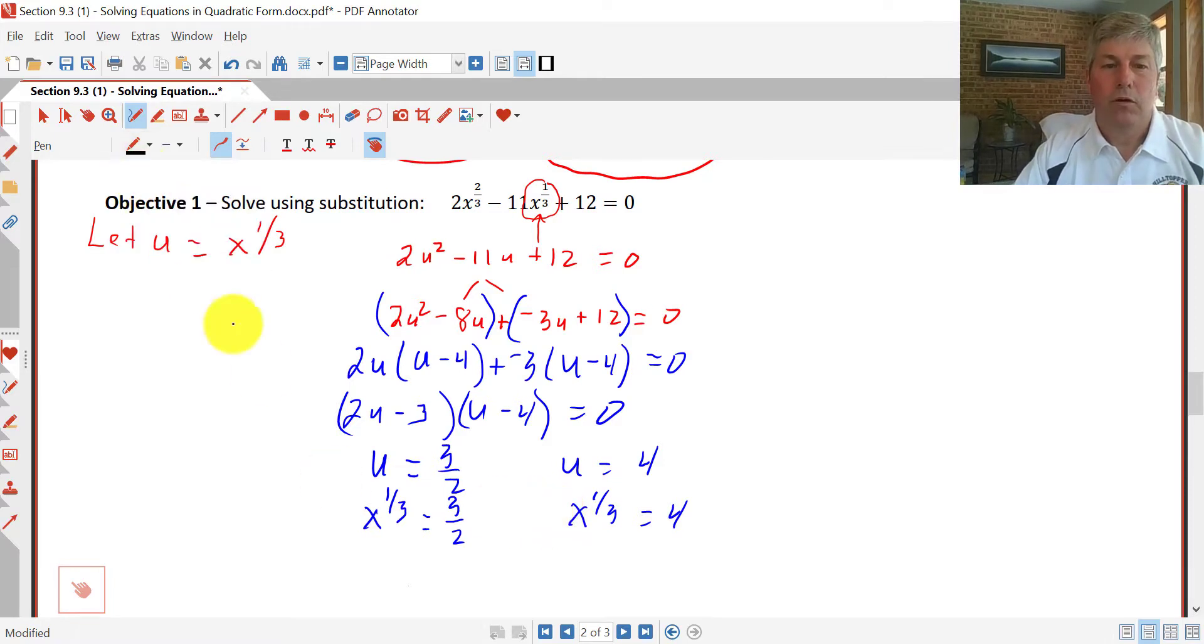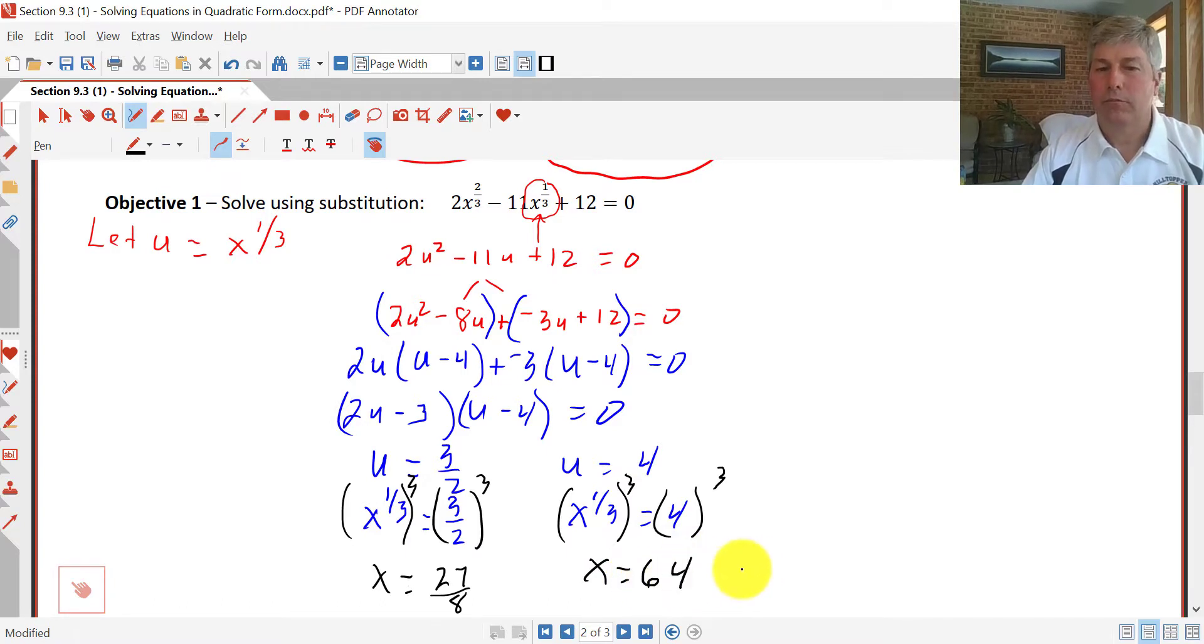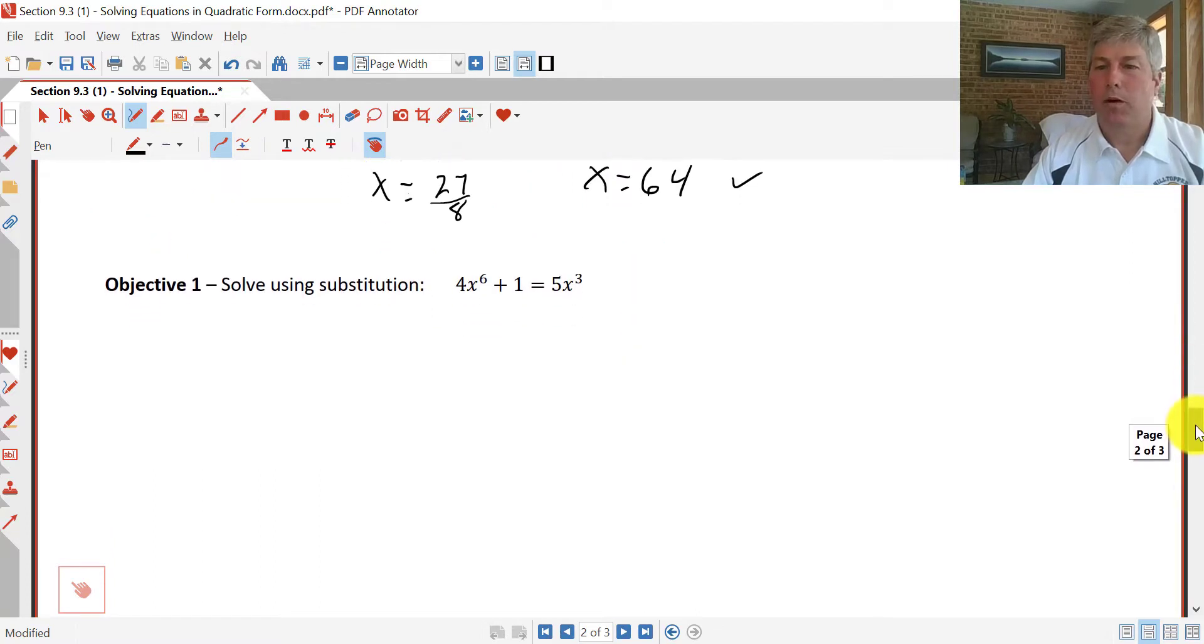We will have to cube both sides. So if I cube each side and show that work, raise that to the third power, we get x equals, and 3 cubed is 27, and 2 cubed is 8. So x is 27/8, and we'll cube both sides here to get x, and we get x = 4³, or 64.